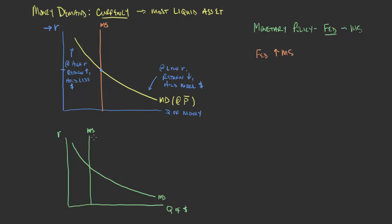What happens to aggregate demand? An increase in the money supply — for example, the Fed buying bonds — would increase the money supply from MS1 to MS2, marked in orange. That would move us down to a new, lower interest rate. As a result of that lower interest rate, we're also seeing a much higher quantity of dollars held — more currency readily available.